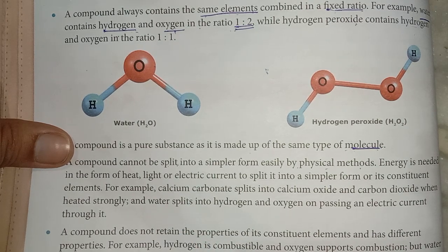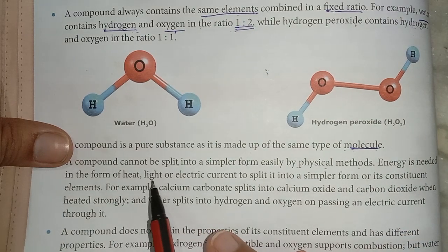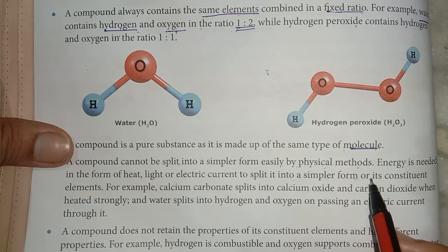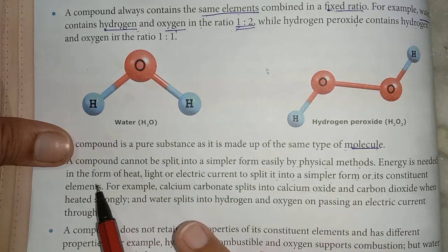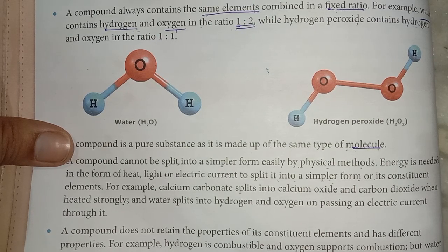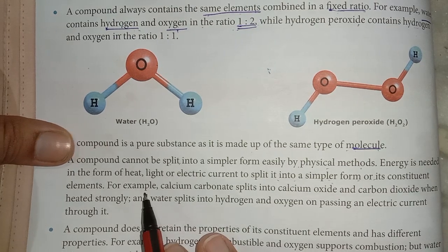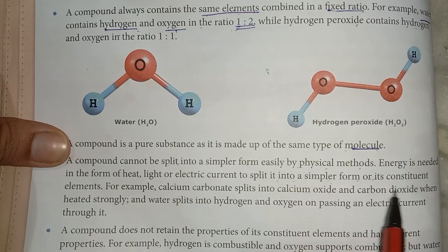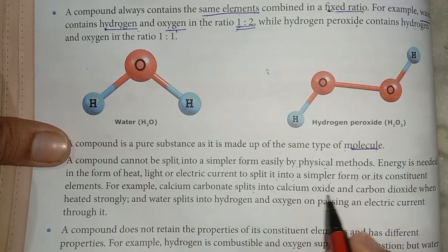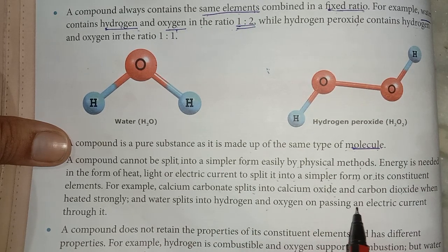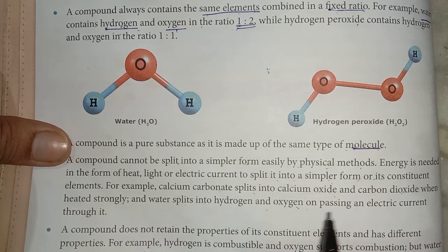When a compound cannot be split by physical methods, energy is needed in the form of heat, light, or electric current to split it into its constituent elements. For example, calcium carbonate splits into calcium oxide and carbon dioxide when heated strongly, and water splits into hydrogen and oxygen when electric current is passed through it.